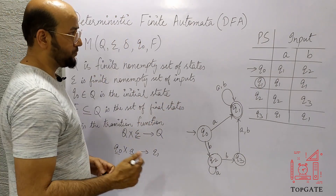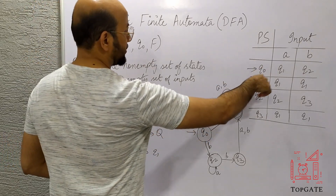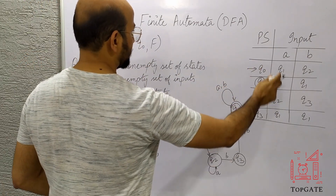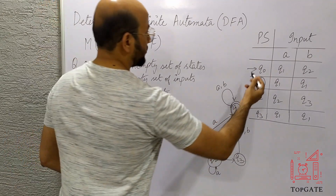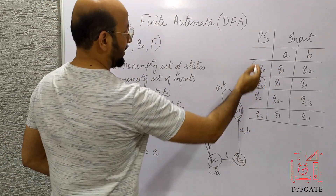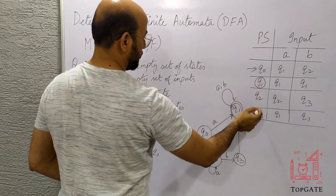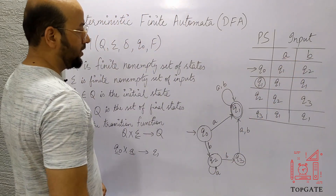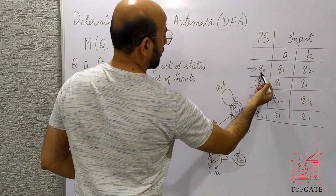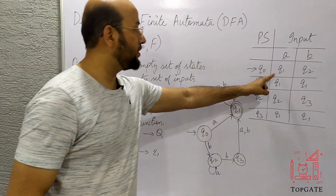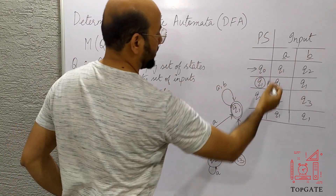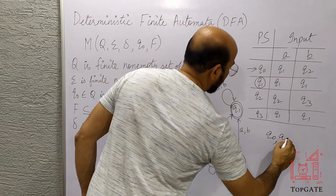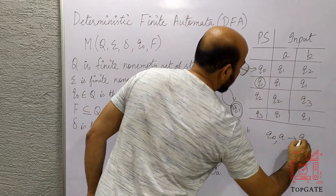This DFA can be represented in two forms. The first form is the transition table, and the second form is the transition graph. In the transition table, we have the present state — Q0, Q1, Q2, Q3 — and the input alphabets A and B. At state Q0, when input symbol A is applied, we reach state Q1.